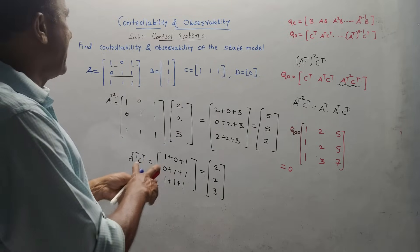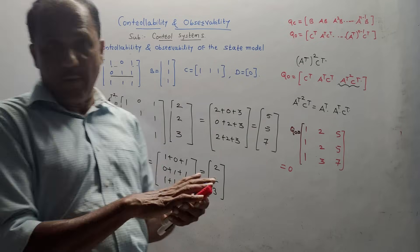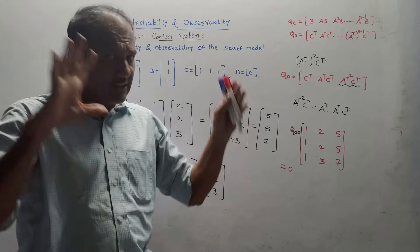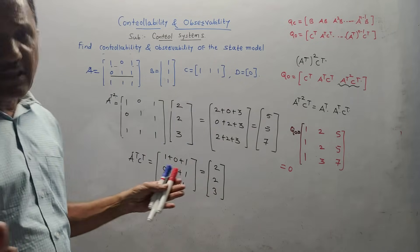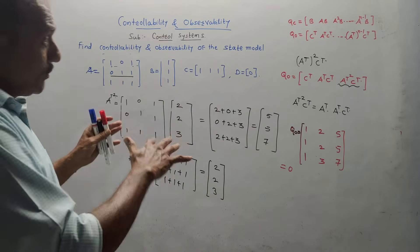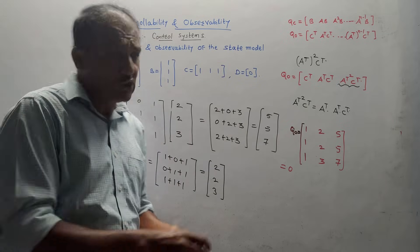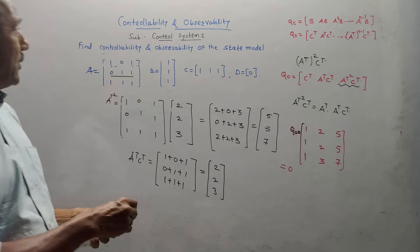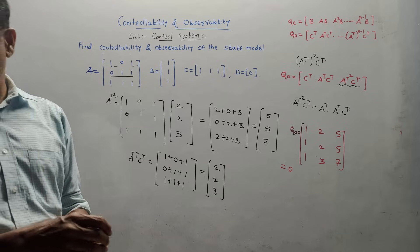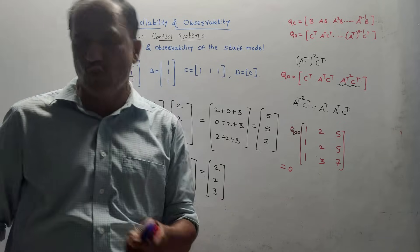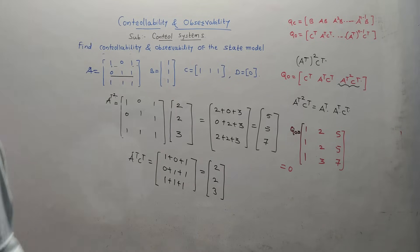This is the way how you can solve the numericals related to controllability and observability. As I mentioned, these numericals are pretty simple, so please do not skip this topic. That is it for unit number five for the subject control systems. Thank you, thanks a lot for watching this video.